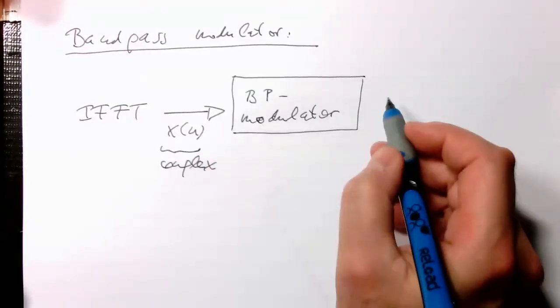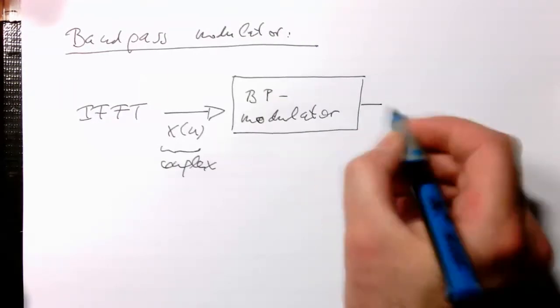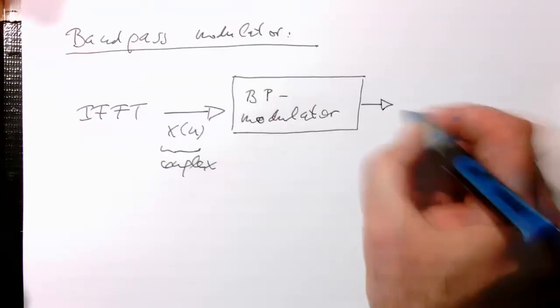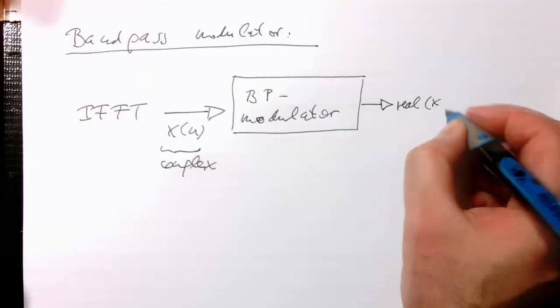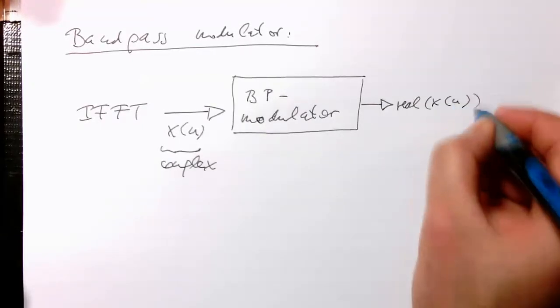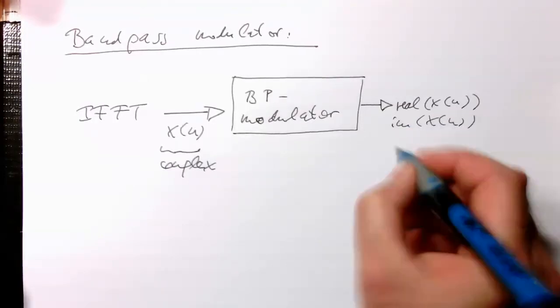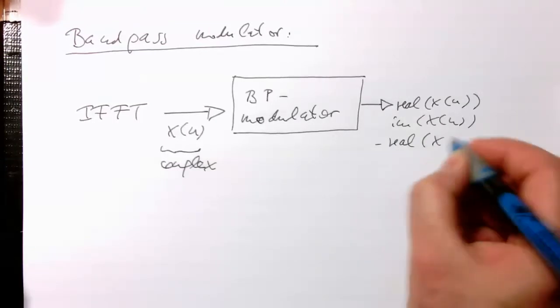This bandpass modulator does nothing else than creating essentially a sequence of real from x of n, then the imaginary part of x of n, and then minus real of x of n.